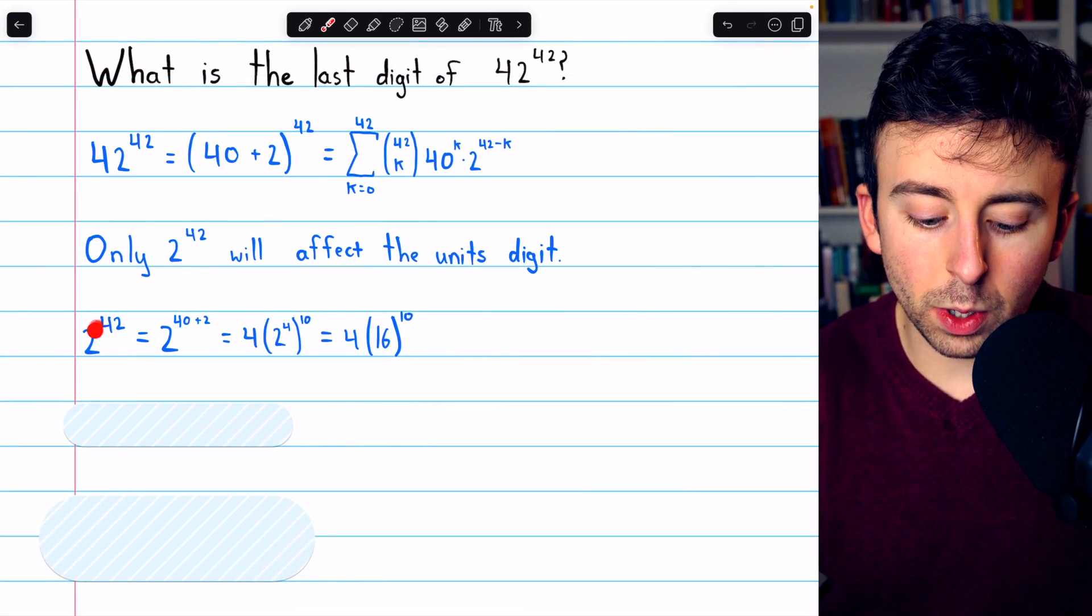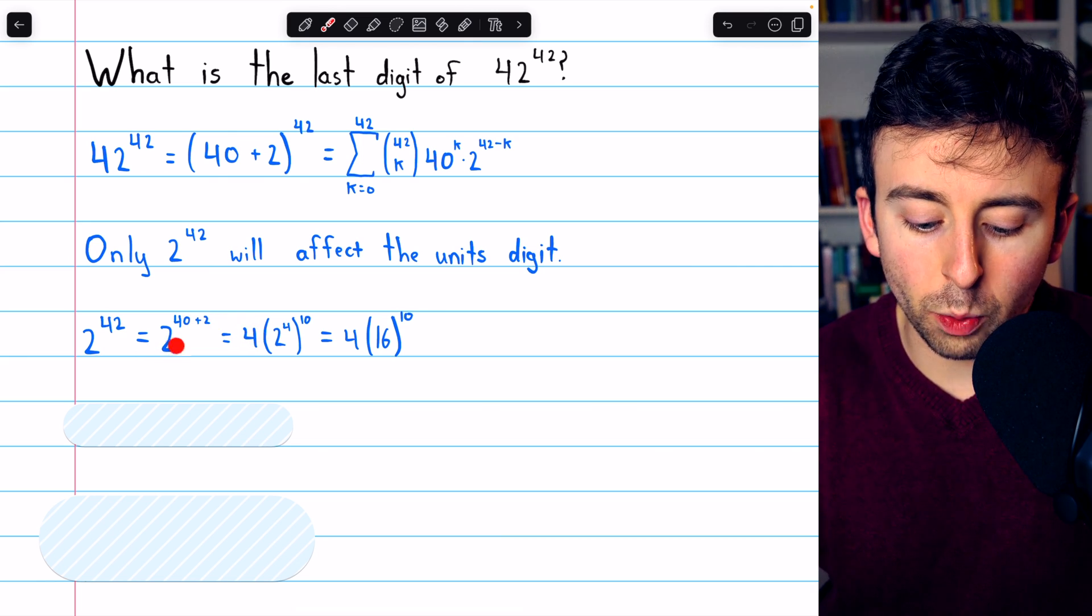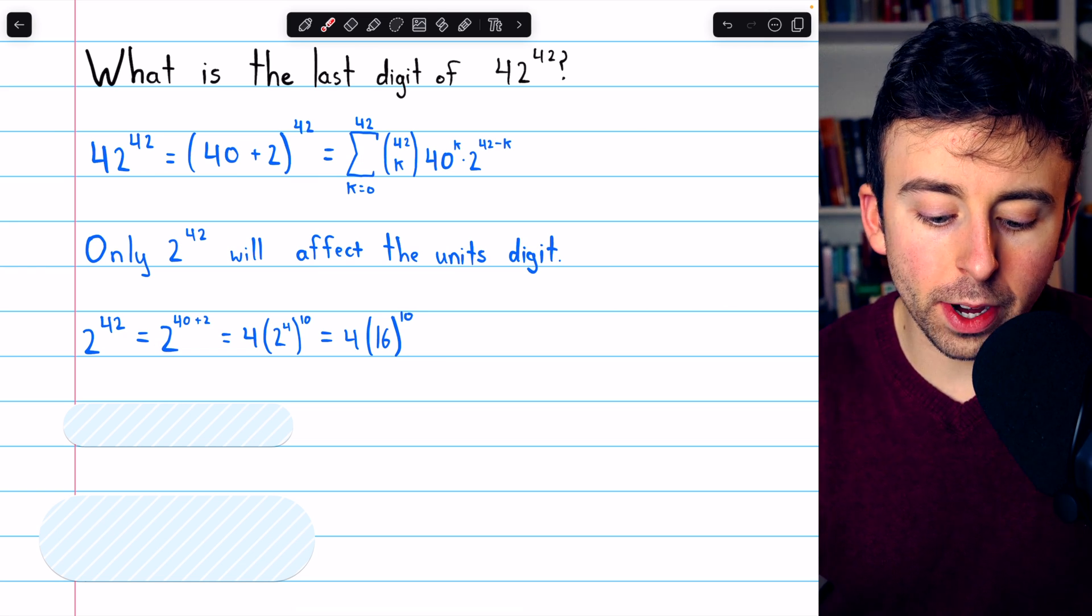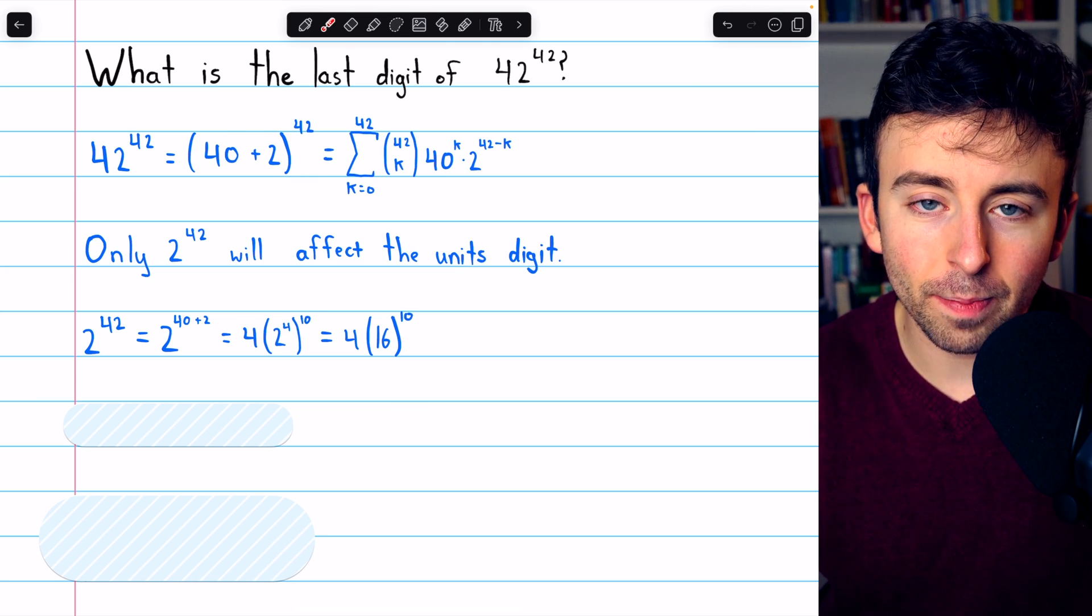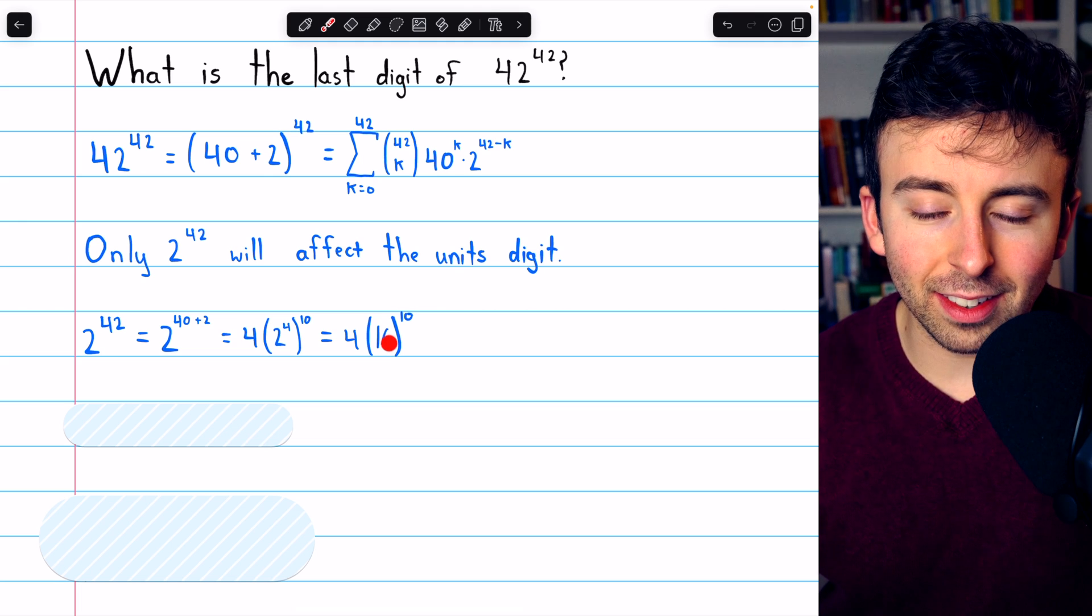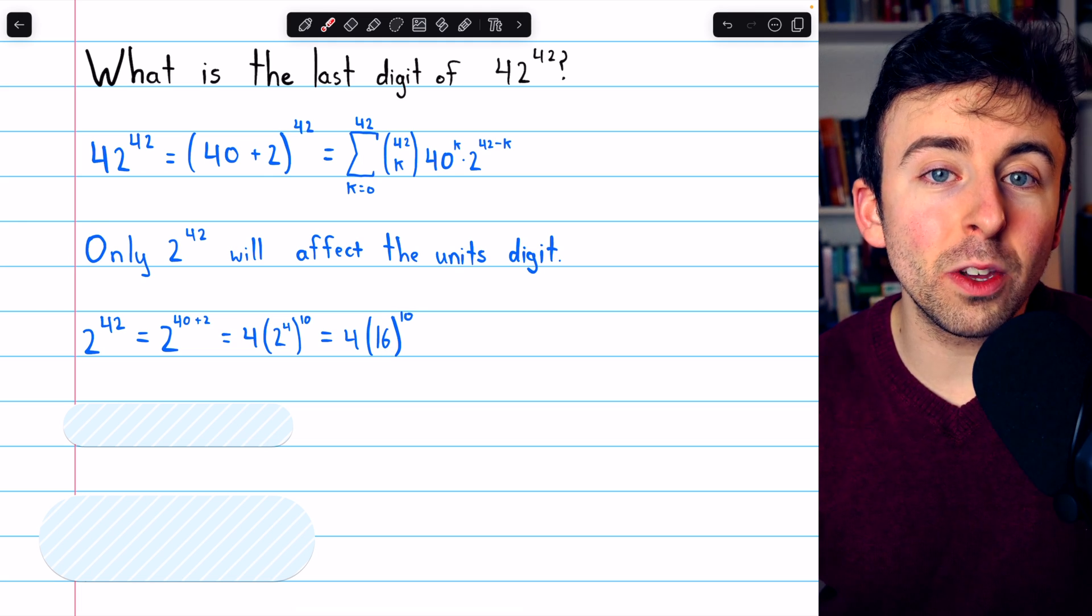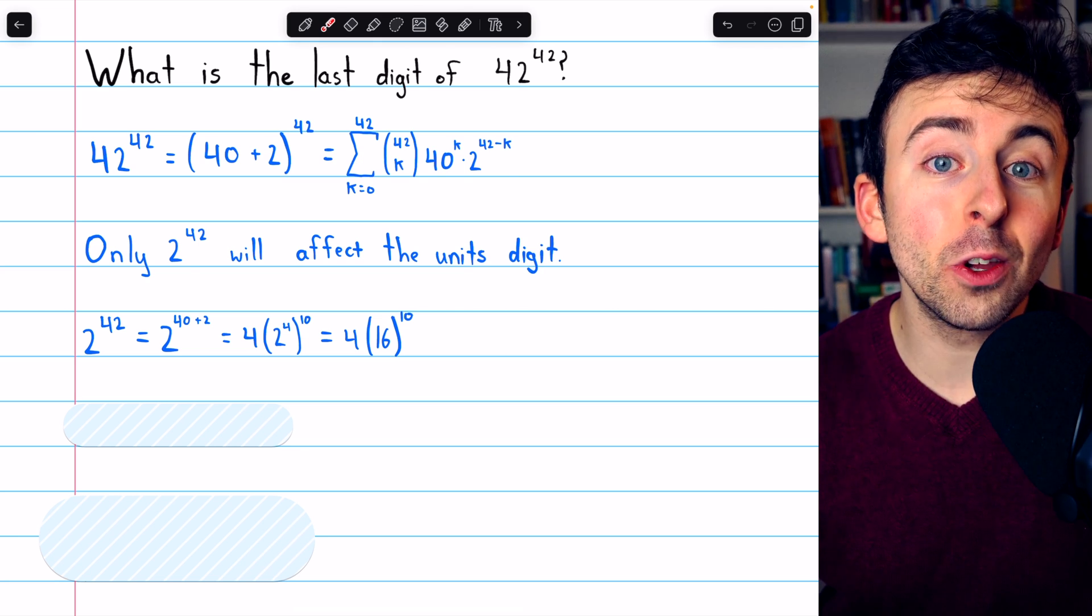2 to the 42 is equal to 2 to the 40 plus 2. 2 to the 2 is just 4, so we can pull that out. And that just leaves behind 2 to the 40, which is the same as 2 to the 4 to the 10. This is useful because 2 to the 4 is 16.